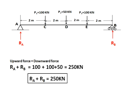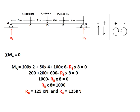I'm assuming upward force is equal to downward force, which means RA plus RB equals the sum of all three point loads, giving us 250. So RA plus RB is equal to 250. I have one equation and two unknowns.